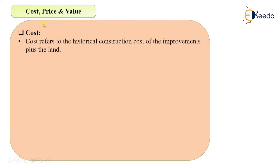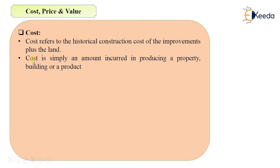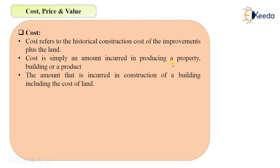First, we will see what is cost. Cost refers to the historical construction cost of the improvements plus the land. It is simply the amount that is incurred in producing or building a property. For example, to construct a house, you need an amount for the plot and an amount for the construction — that is your cost. It will not include any profits. Cost is only the amount incurred in construction of a building including the cost of land, with no profit added.